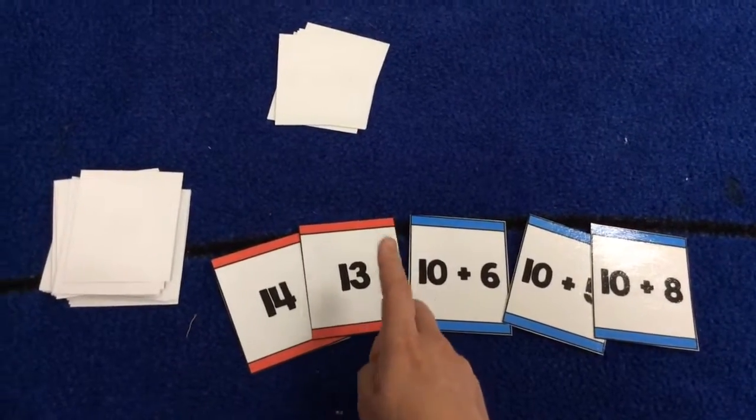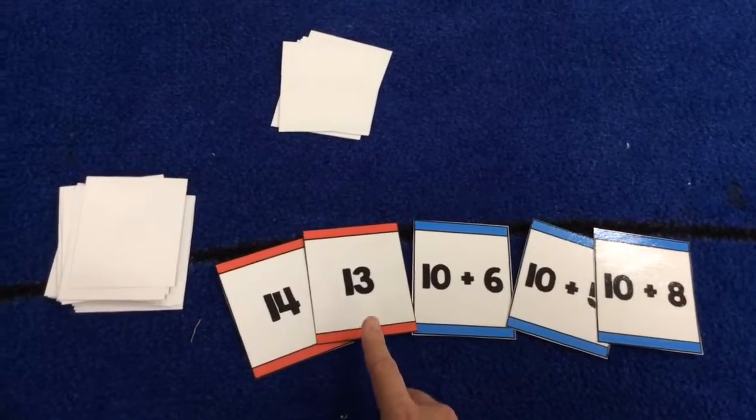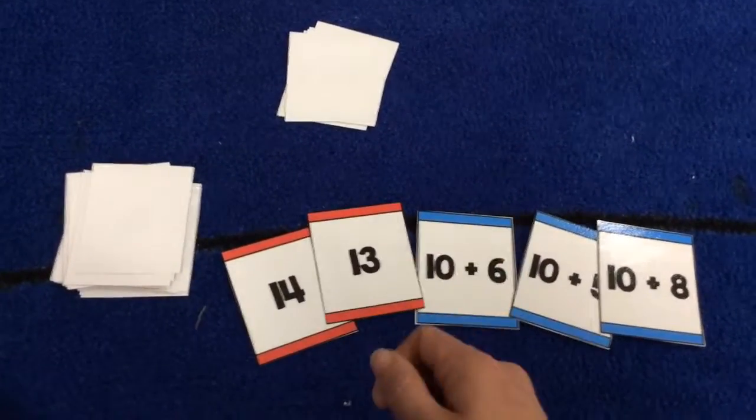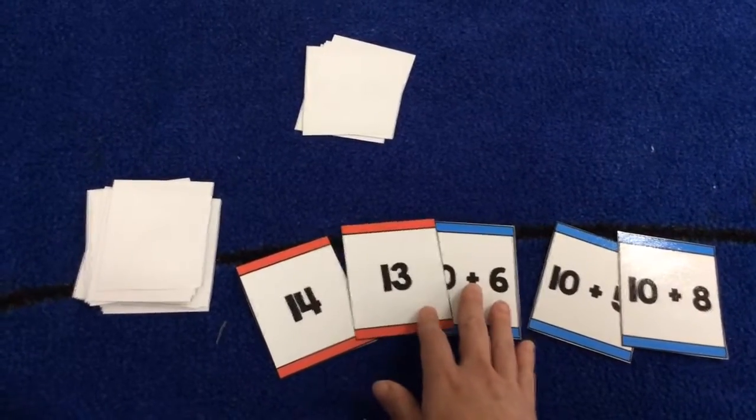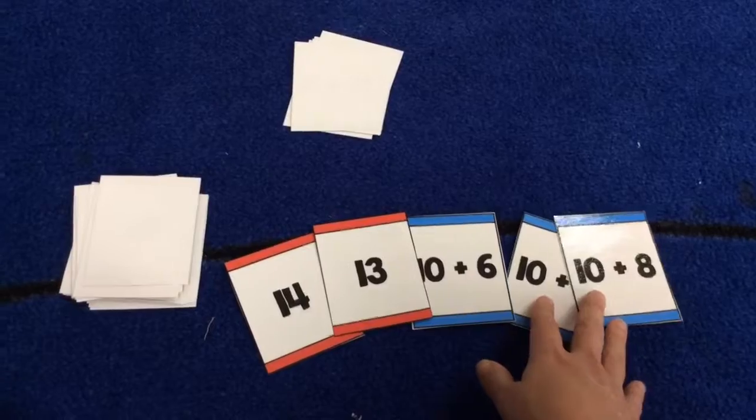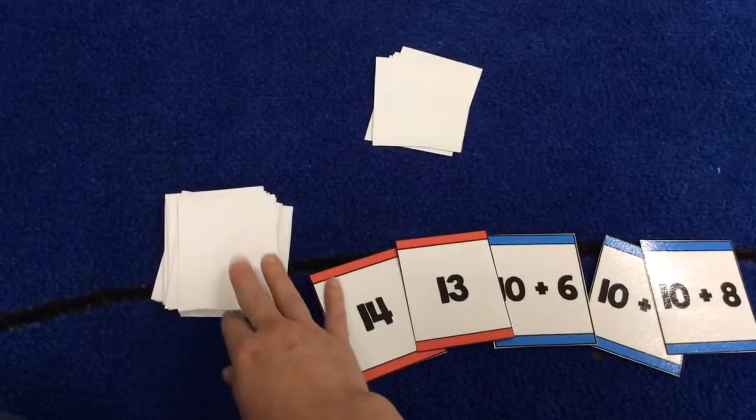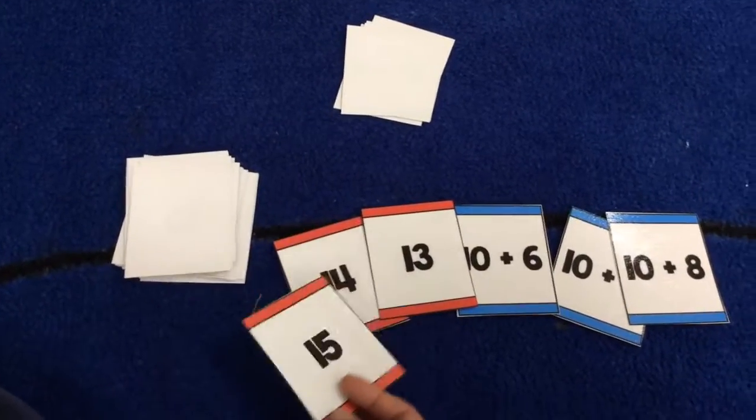My partner will look at their cards, and if they have any other way to show thirteen, they're going to hand me the card, and I make a match. If they do not, they're going to tell me, go fish. And then I will collect another one from the pile.